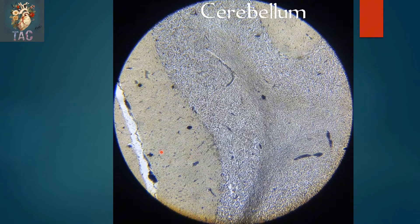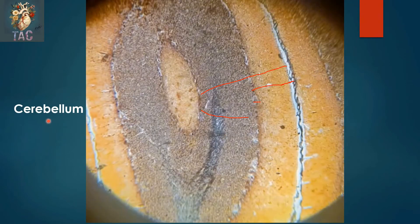Another slide of the cerebellum at low magnification showing the gray matter and white matter. In the gray matter you can see the molecular layer, then the Purkinje cell layer, and then the granular layer. In the center you can see the white matter.